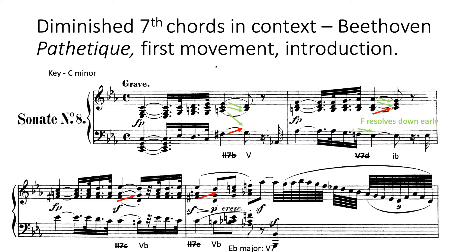Okay, so that's what it sounds like. And this is what a diminished seventh chord might look like in context. We get a diminished seventh chord really quite early on. We start off on chord one in C minor and then we land on this chord, and if we consider the way this chord resolves it will give us a clue as to the function of this chord.